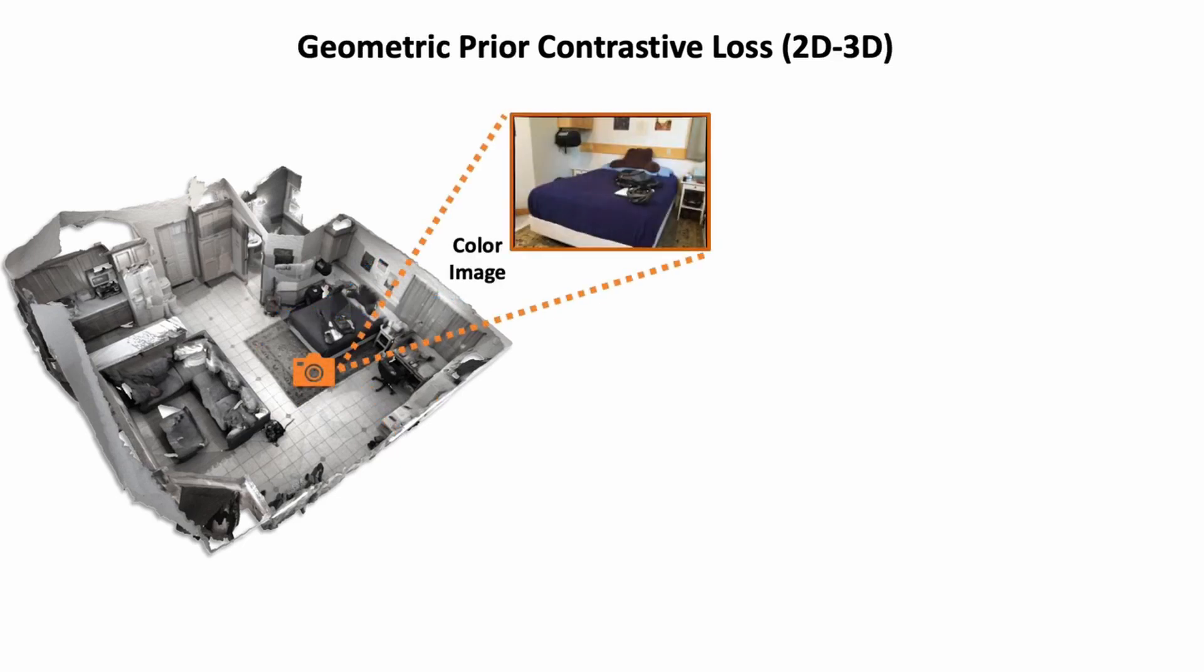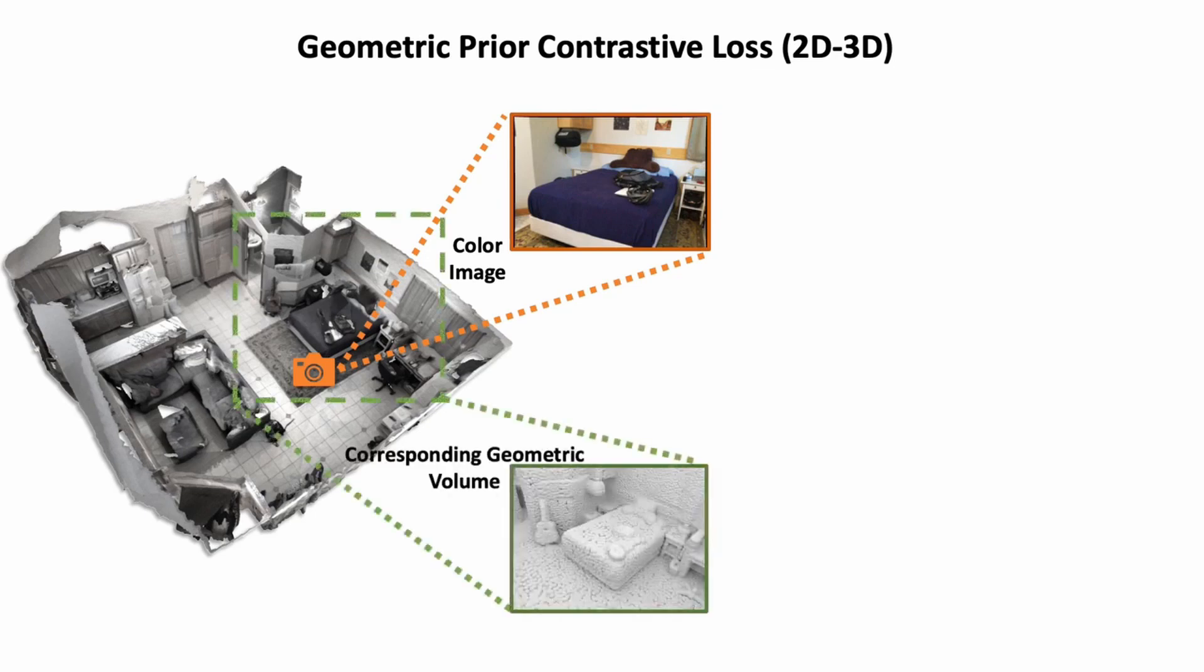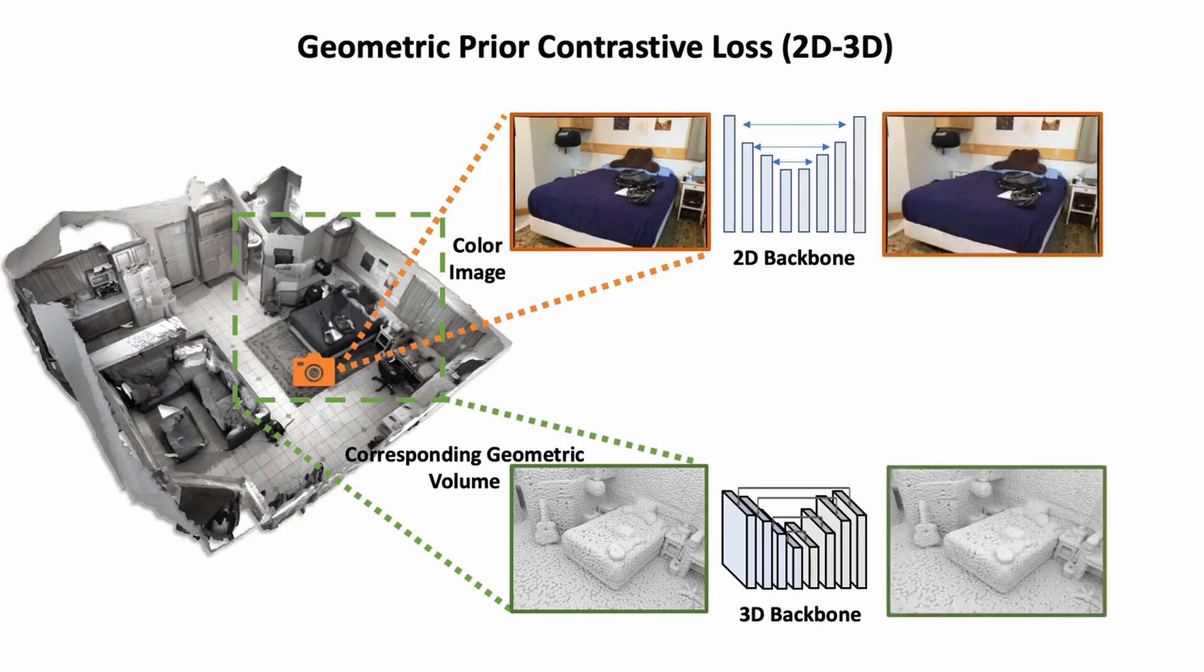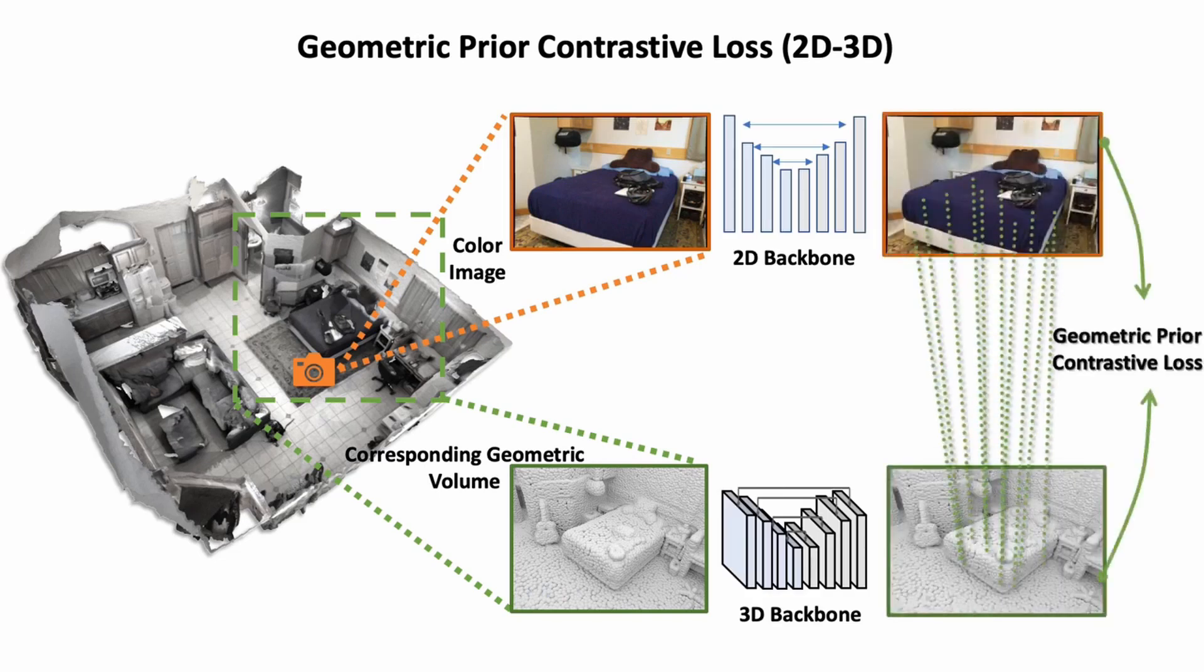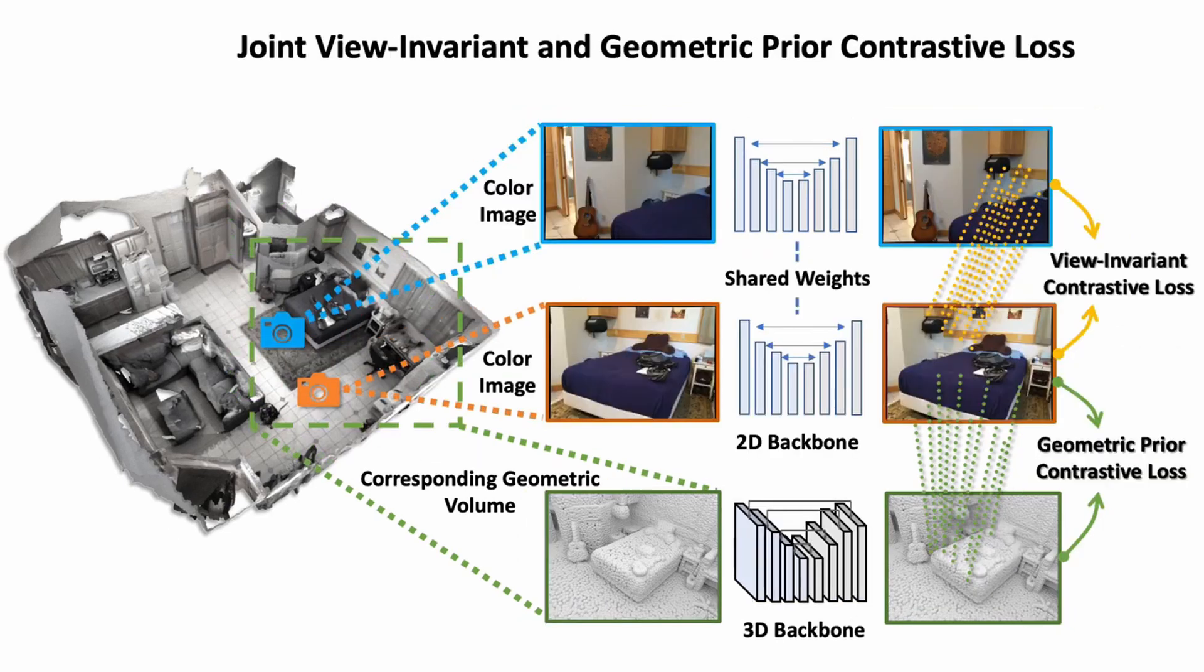We also introduce geometric prior contrastive learning. For each image of an RGB-D sequence, we consider the corresponding geometric volume in the 3D scene. We then compute the geometric prior contrastive loss between the 2D-3D correspondences. We can also jointly train with both losses together.